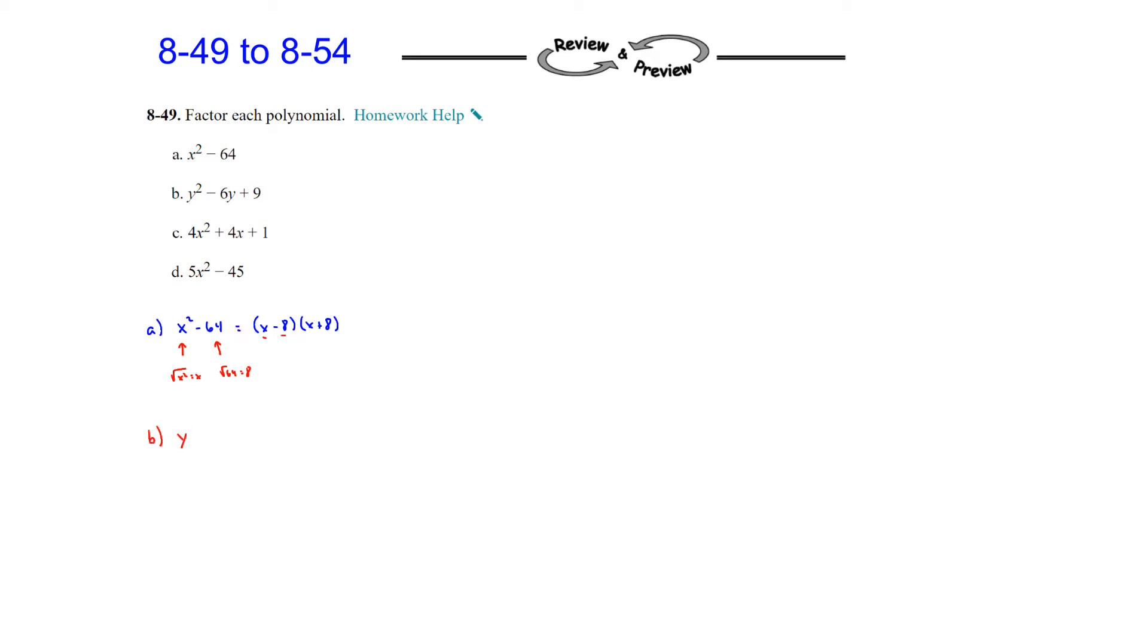Part b, y squared minus 6y plus 9. Once again, this is one of the other ones we did, which is a perfect square trinomial, and your first and last terms are perfect squares, 9 and y squared, and then your middle term is 2 times each of those. So if the square root of y squared is y, and the square root of 9 is 3, then it's 2 times y times 3, which is 6y. So that means we can factor that into a binomial squared, y minus 3 squared.